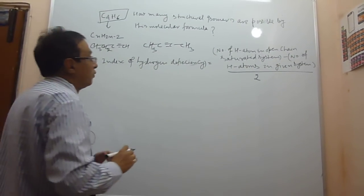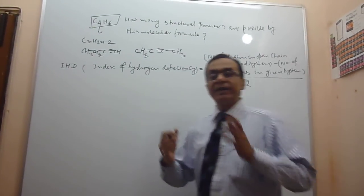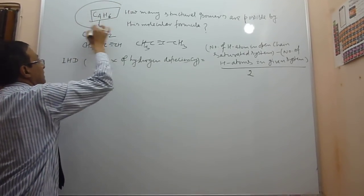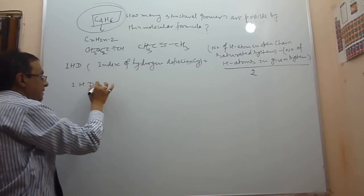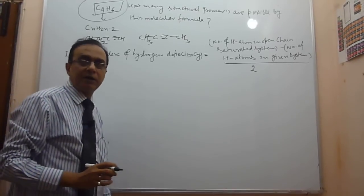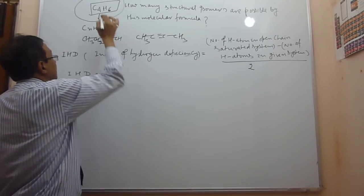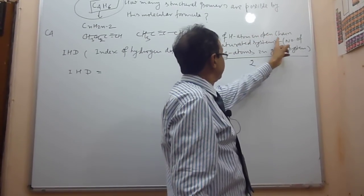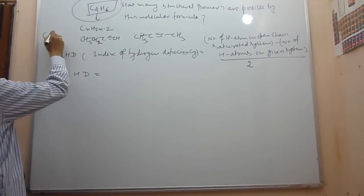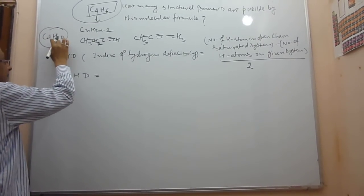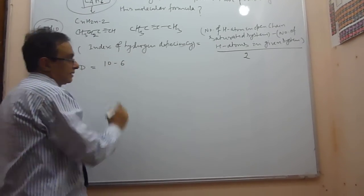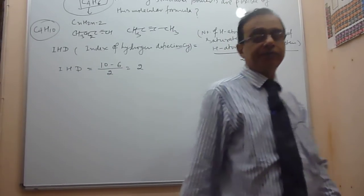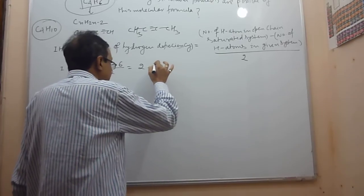By knowing the value of IHD, we can determine the number of structural isomers very easily. For this molecular formula C4H6, IHD equals — for C4, the open-chain saturated formula is C4H10, so IHD = (10 minus 6) divided by 2, which equals 2.